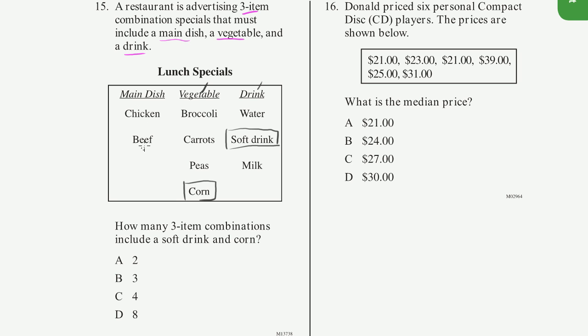There's two possible ones, chicken and beef. So it's two. Just to make sure you understand that, what are the two combinations, just to make it explicit?